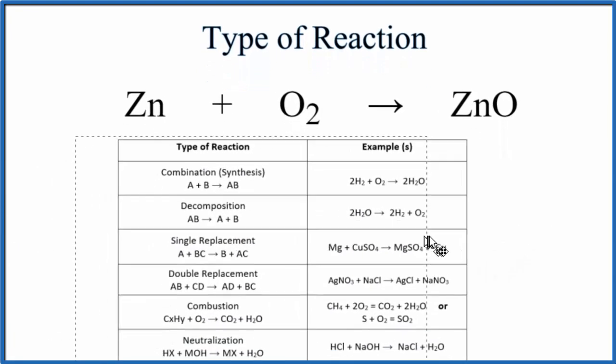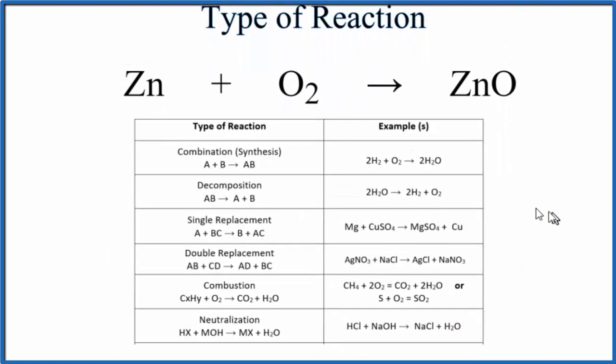If we look at this table of common types of chemical reactions here, and we look down, here is the combination reaction. It's also called a synthesis reaction. So it takes this general form of A plus B yields AB. So you can think of this as A, and then substance B, and that yields AB.